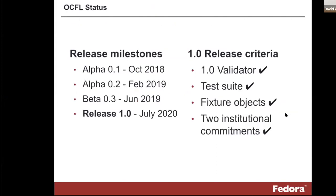In terms of where the specification is, the 1.0 was just released earlier this month. There's a brief timeline in the slides to give you a sense. What was holding up that release was just all of the release criteria, which have now been met: there is a validator you can run to verify your contents conform to the OCFL, a test suite you can run, fixture objects for default testing, and multiple institutional commitments from folks using the standard.